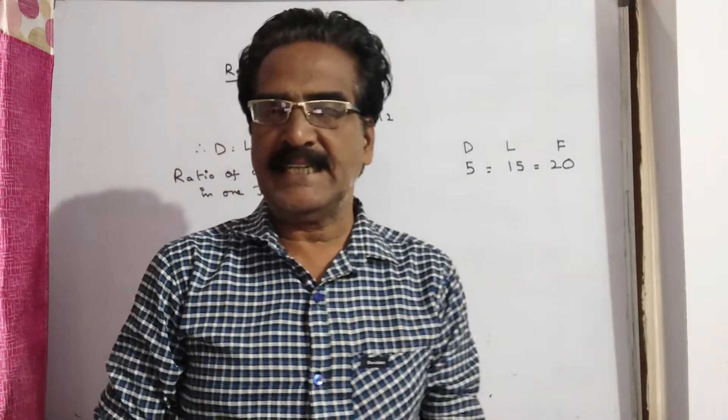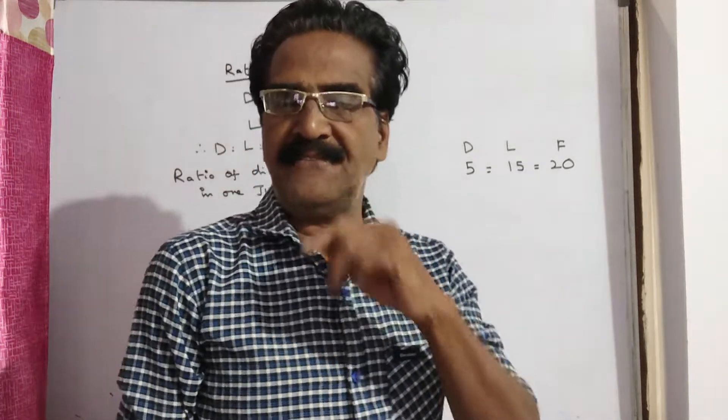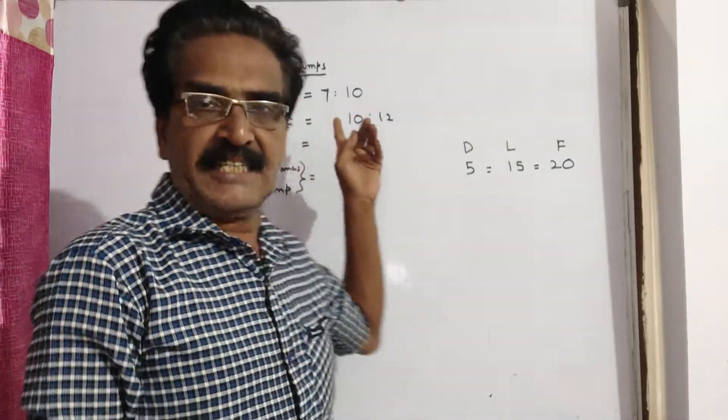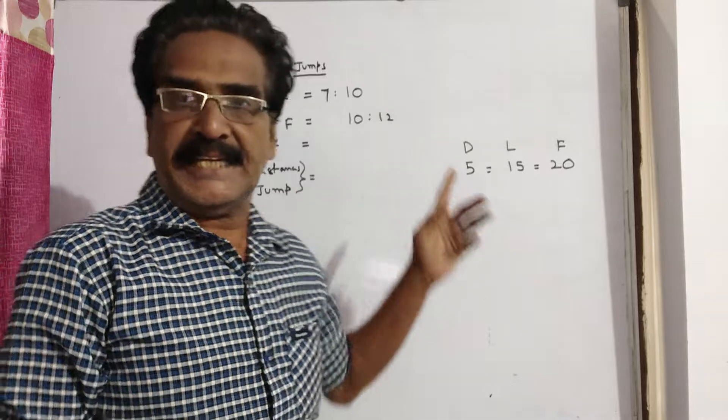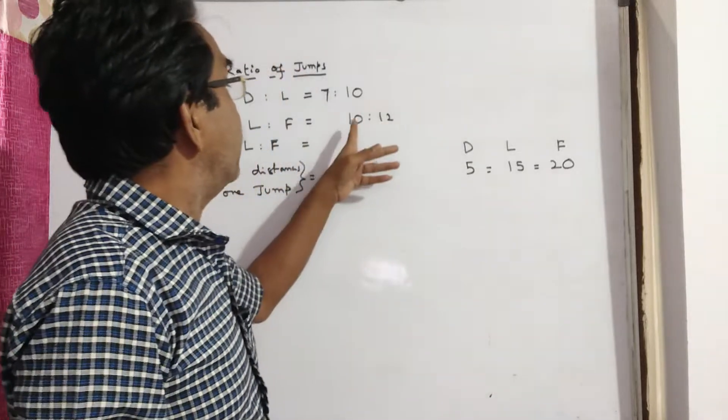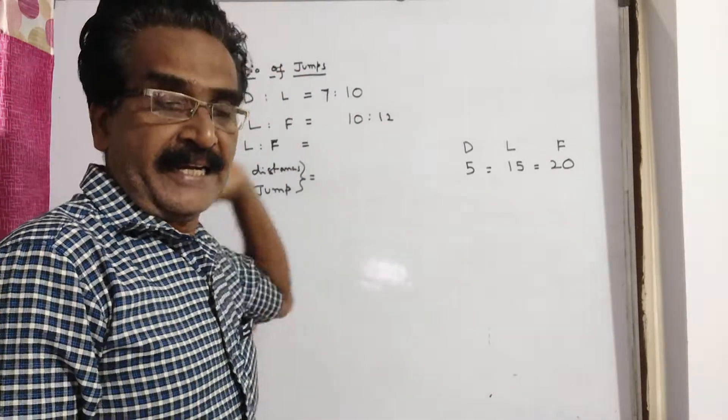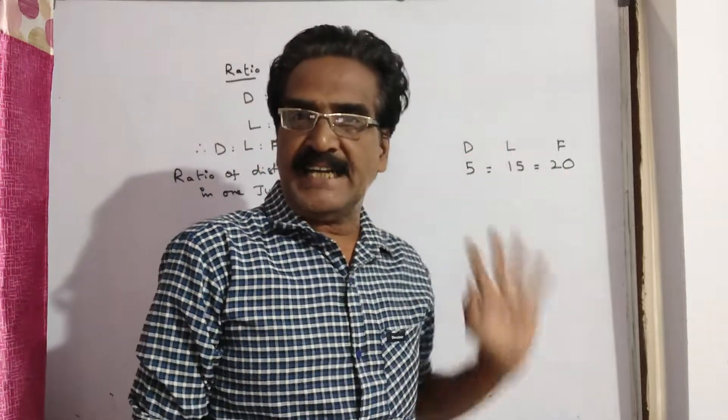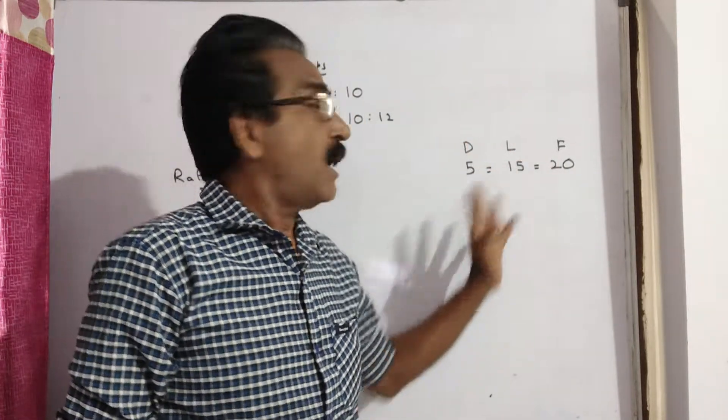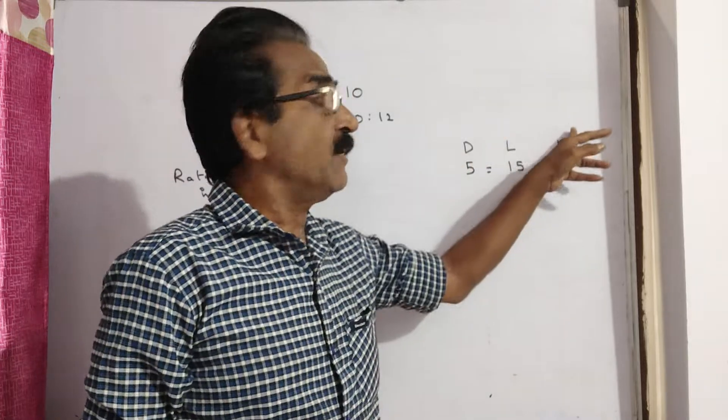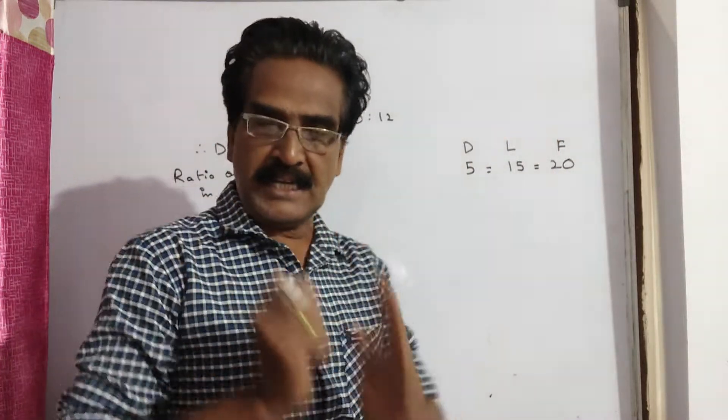Hi friends, good morning. Please look at the next problem in ratio and proportions. A dog takes 7 jumps for every 10 jumps of a lion, and a fox takes 12 jumps for every 10 jumps of a lion. It is also given that the distances traveled by dog in 5 jumps, the lion in 15 jumps, and fox in 20 jumps are equal. What is the ratio of their speeds?